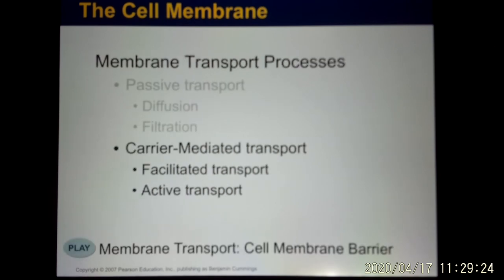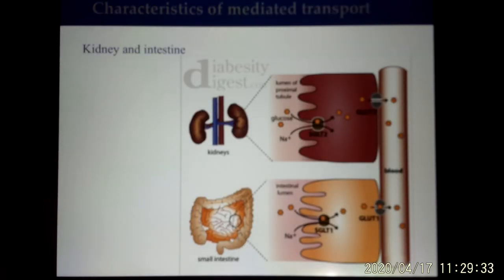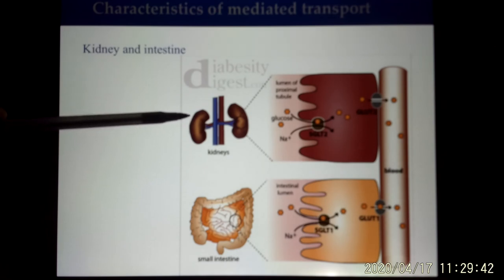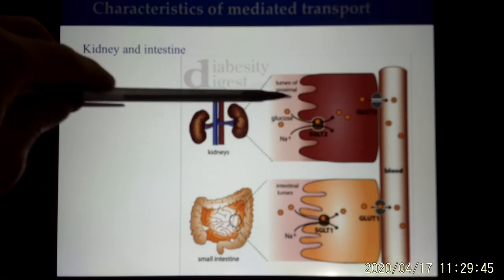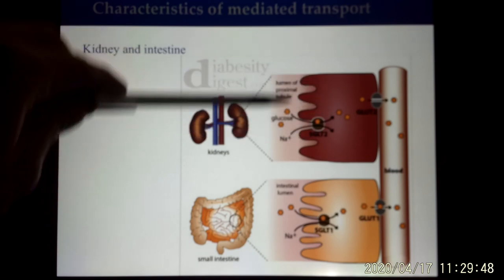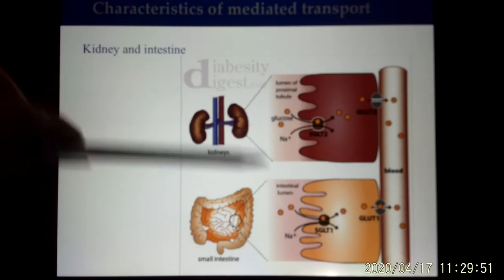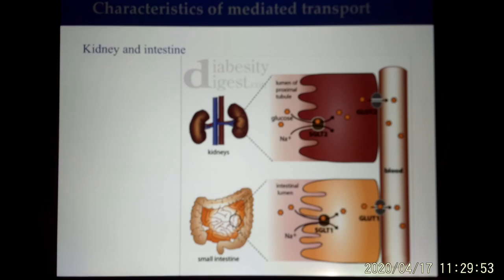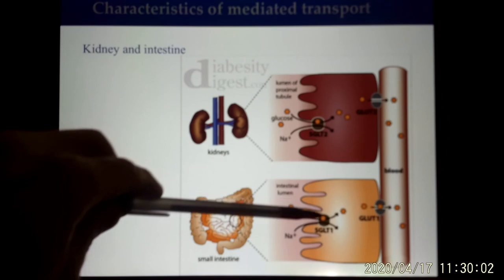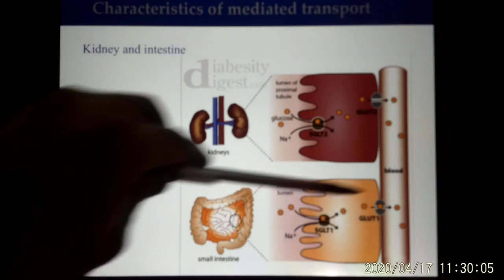Now let's look at carrier-mediated transport, which includes facilitated diffusion and active transport. You see both in the kidney and the digestive system. In the kidney, after filtering blood, important molecules like glucose and sodium need to be taken back so they don't become urine — membrane proteins carry them back. Similarly, after digestion, membrane proteins absorb nutrients into the blood.